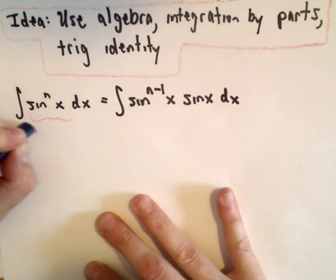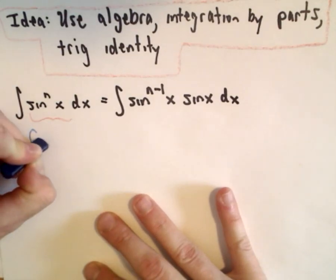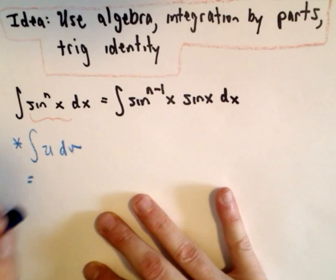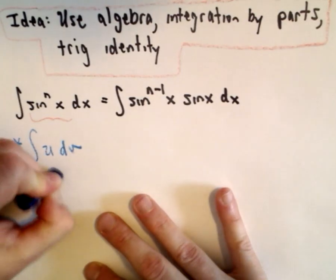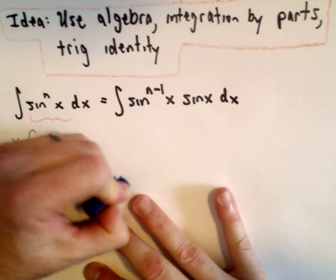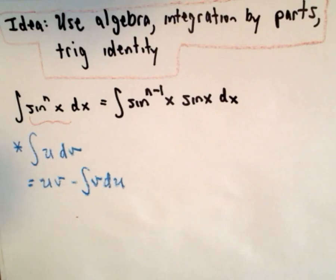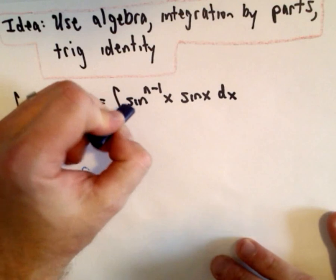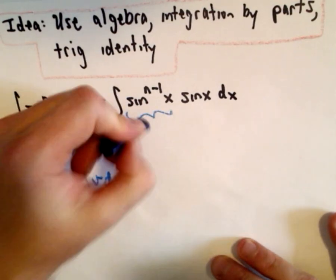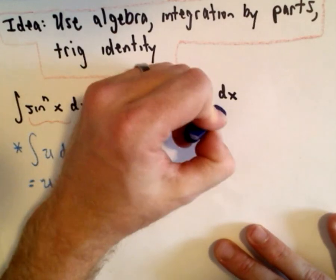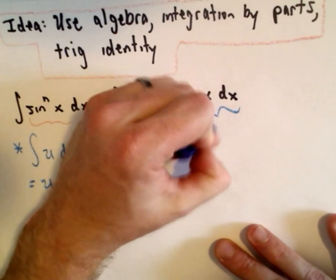Remember integration by parts says the integral of u dv equals u times v minus the integral of v du. In this case, sine^(n-1)(x) is going to be playing the role of u, and sine x dx is going to be my dv.